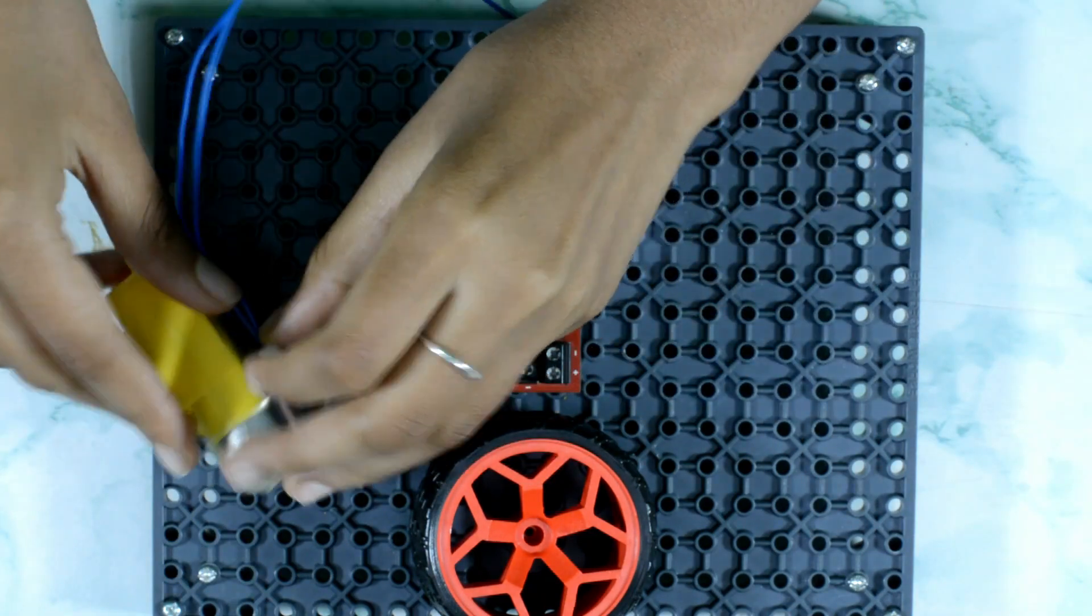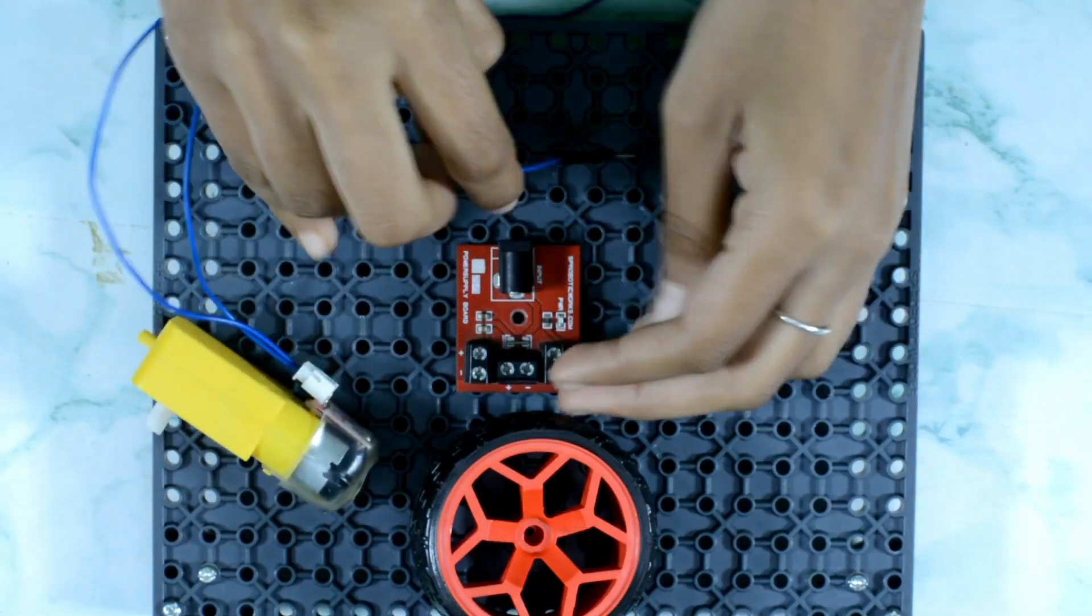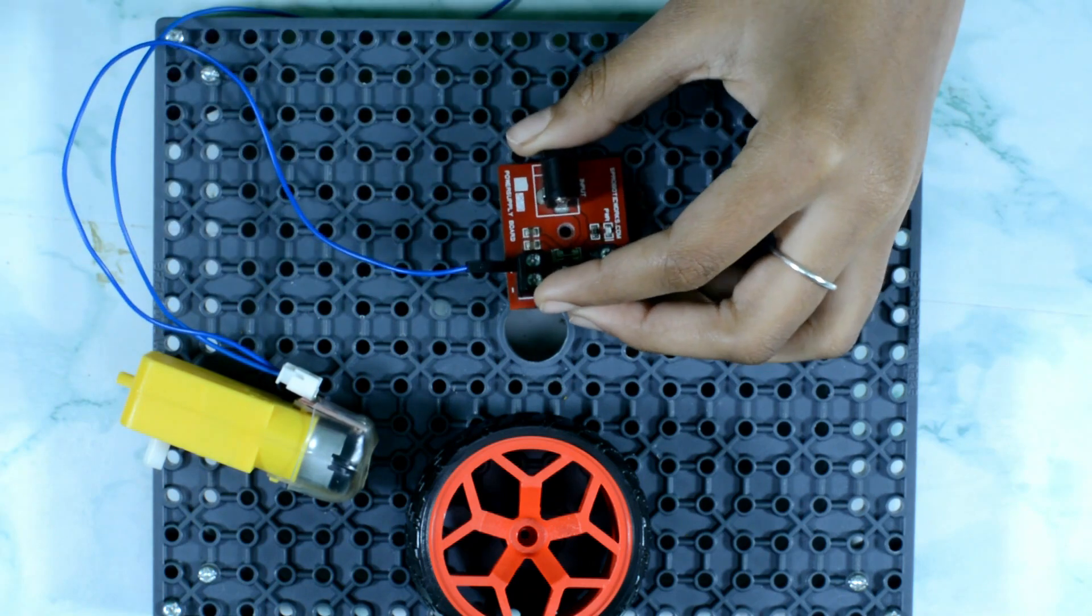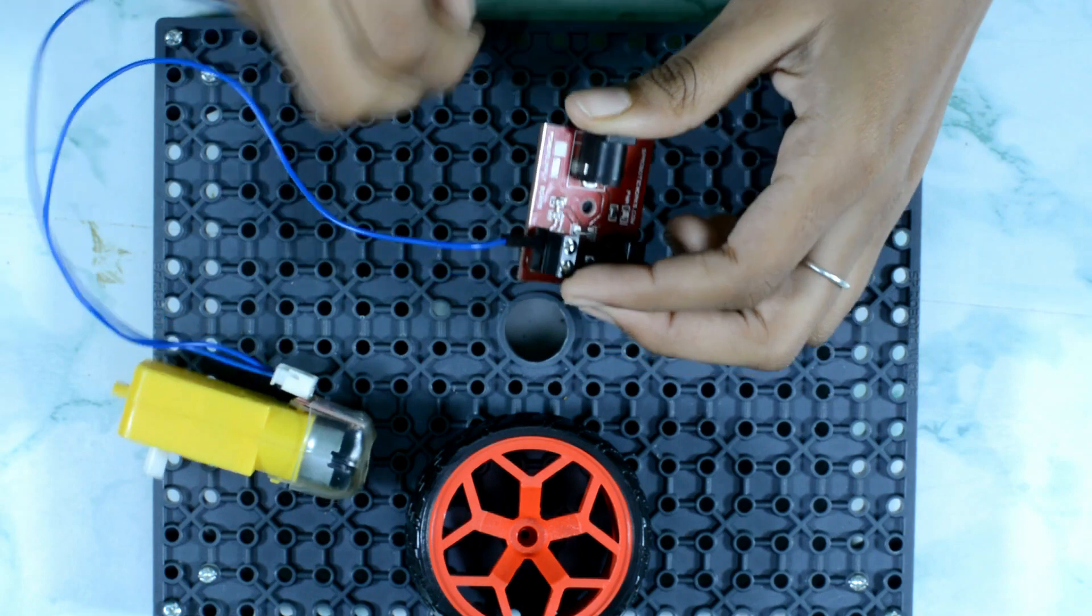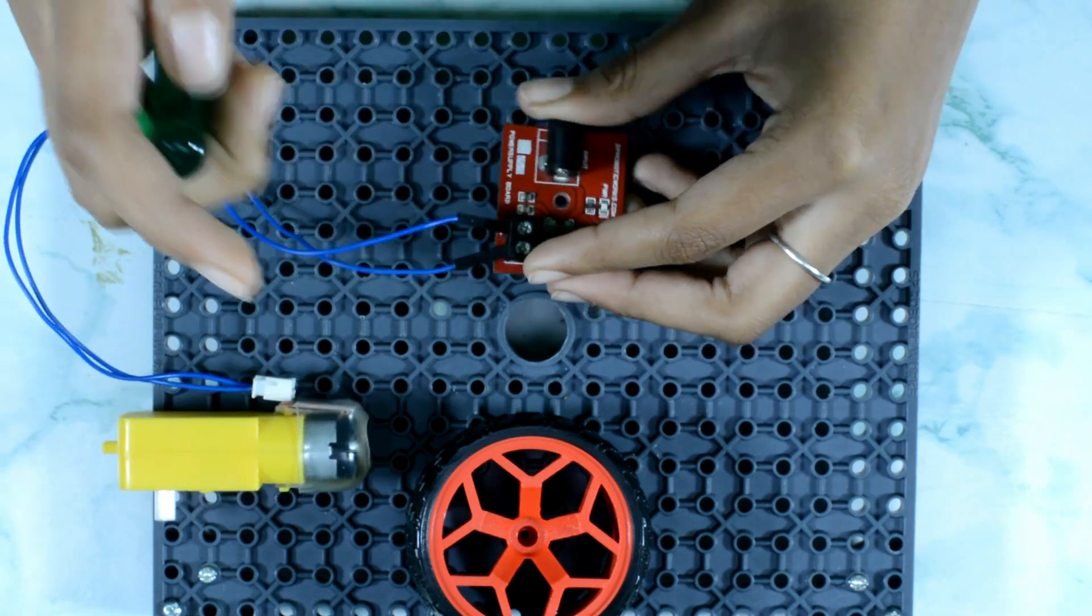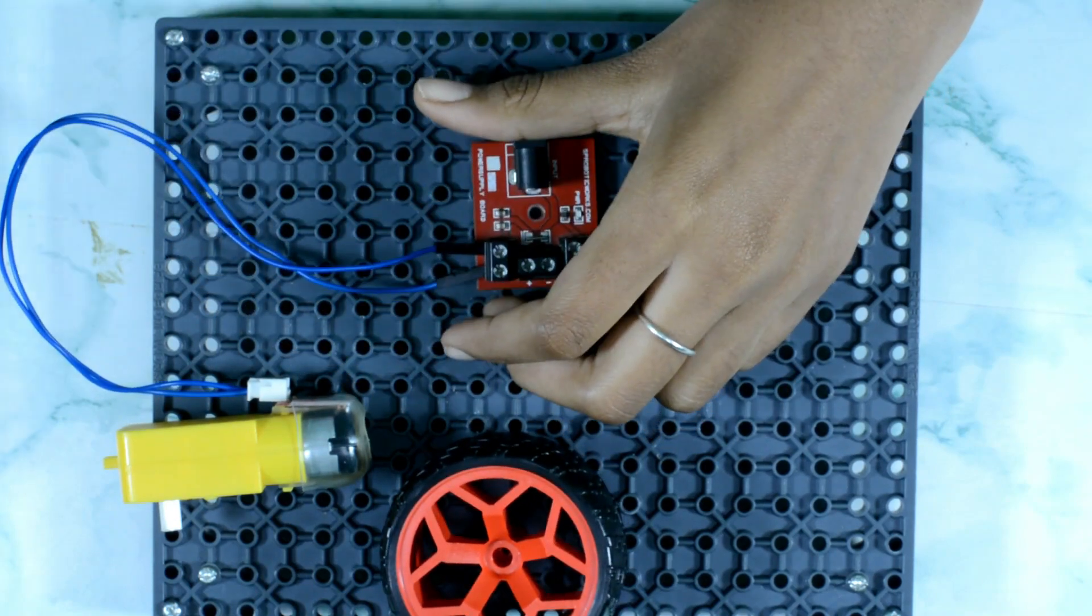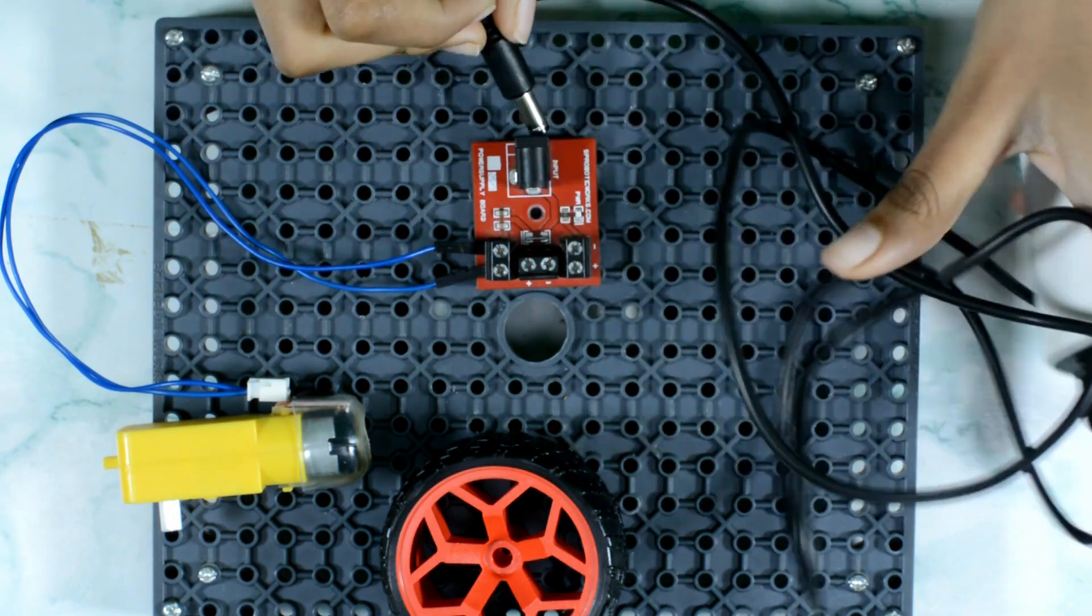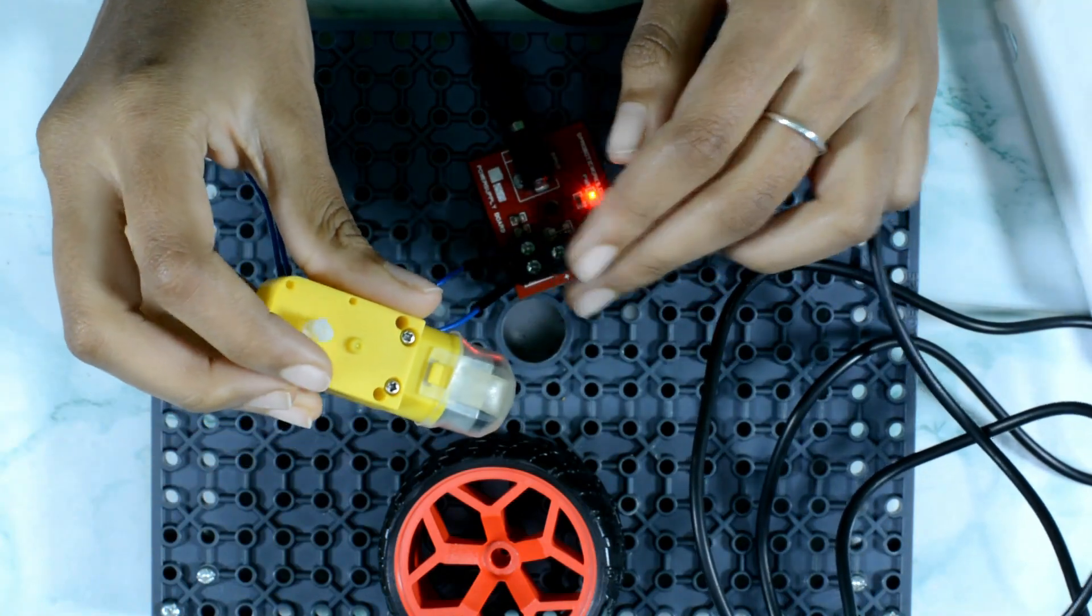Then what we have to do is, first let me check if this motor is working. So we're going to take any of the jumper wires here and connect one to the positive and the other one to the negative of the power supply board. Then let's connect the battery to see if this motor is working. Yes guys, we can see the shaft turning around.